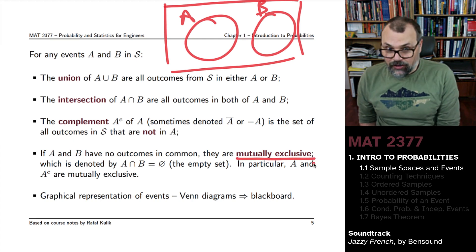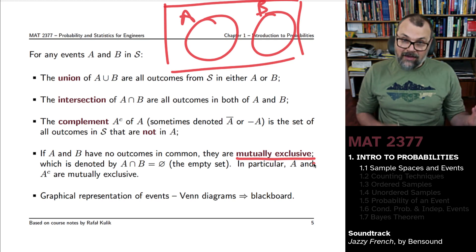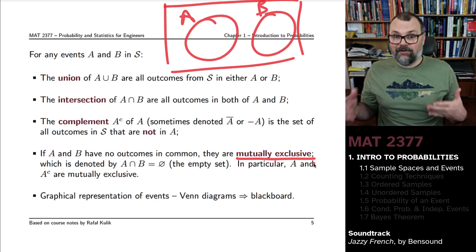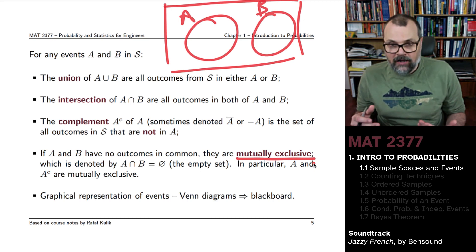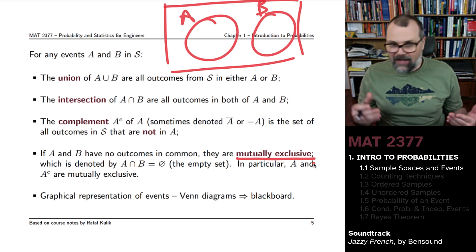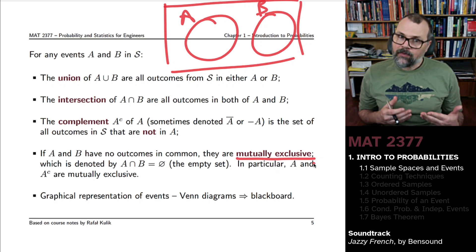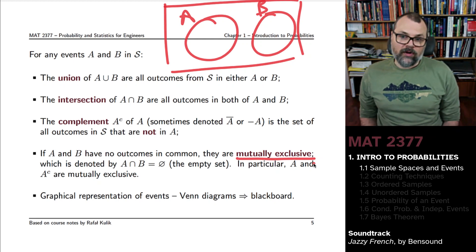And by definition, because A and its complement cannot have an intersection, right? A complement is everything which is not in A, so there cannot be anything in A complement which is also in A, you are working with two mutually exclusive events.